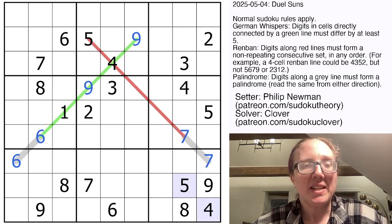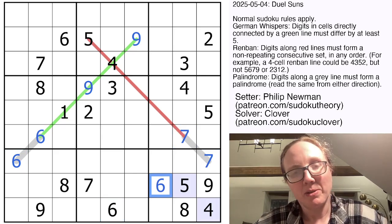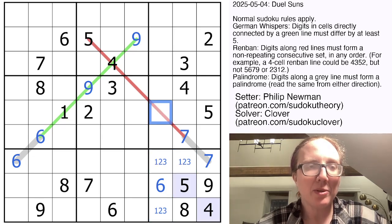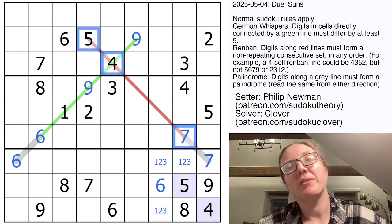Now there is a six right here, because that's the only position we can put a six in the bottom right region. That's going to be a one, two, three. And so we have a four, a five, and a seven on the Renbon already.